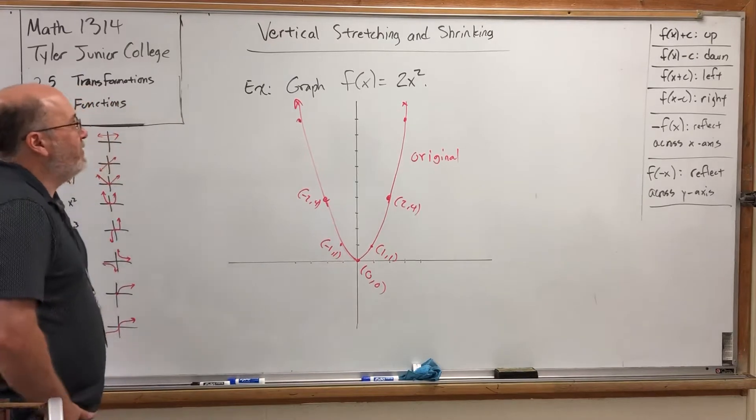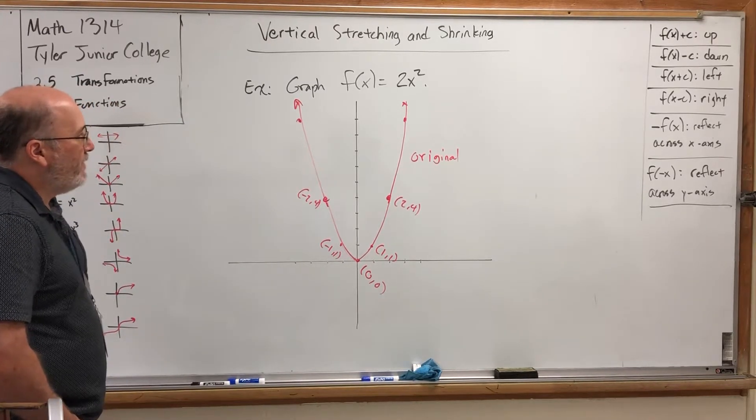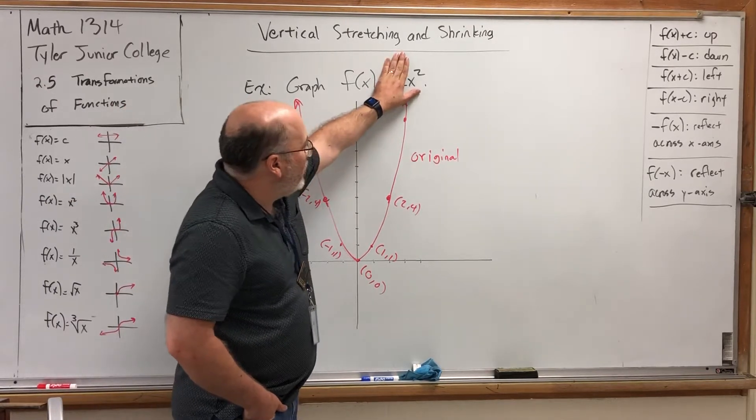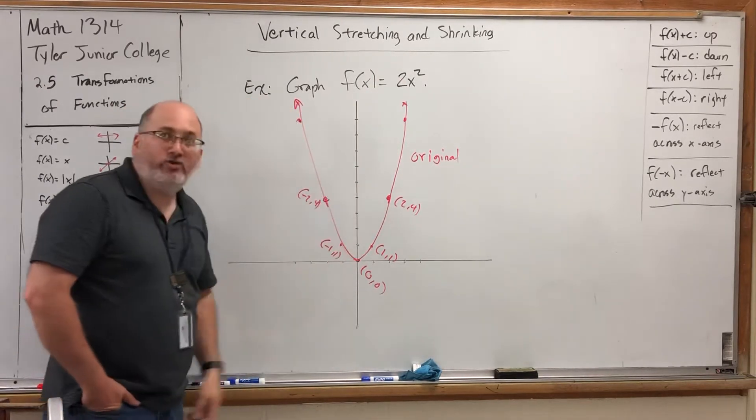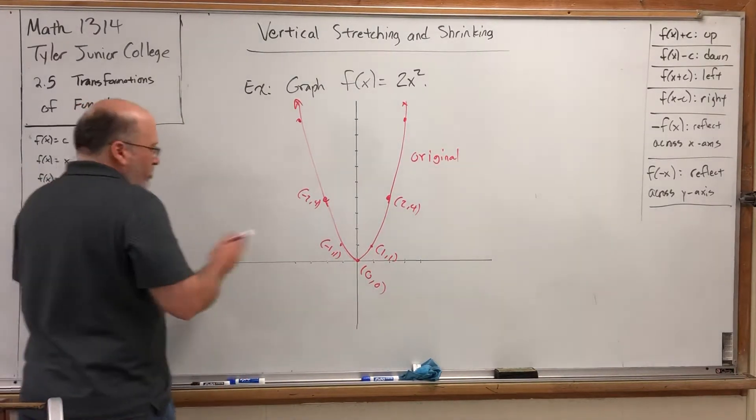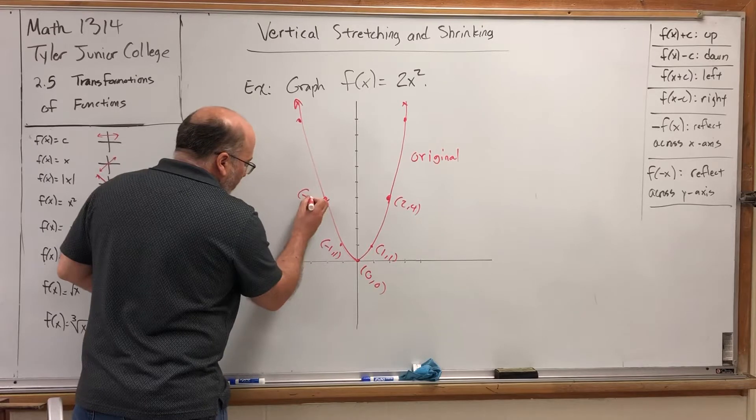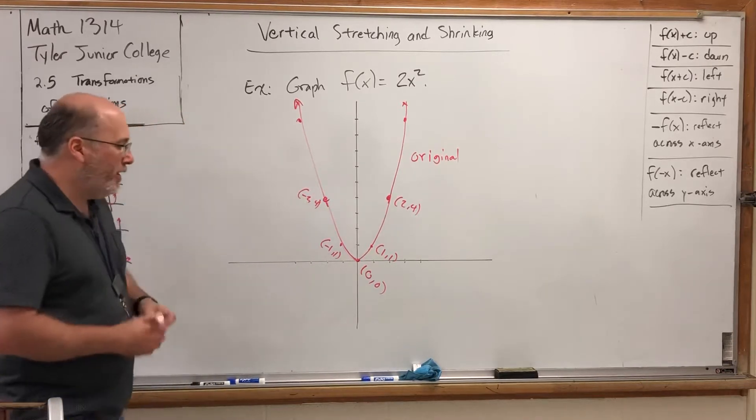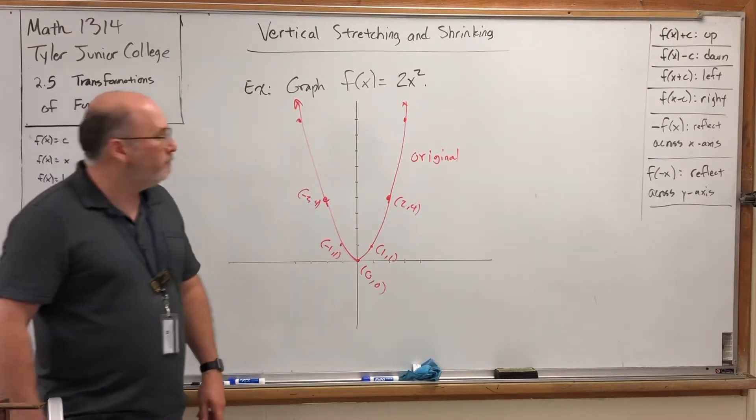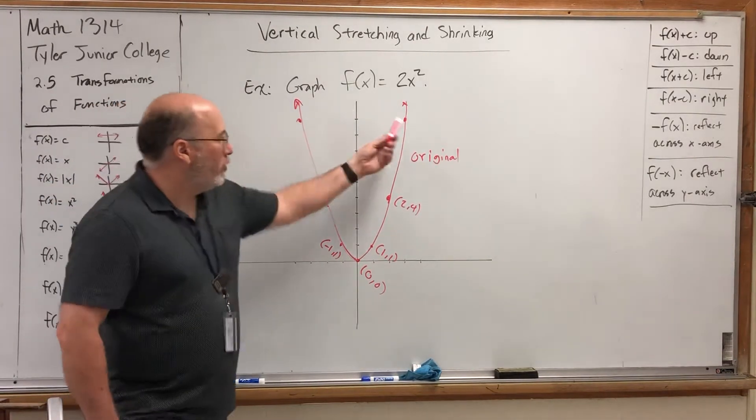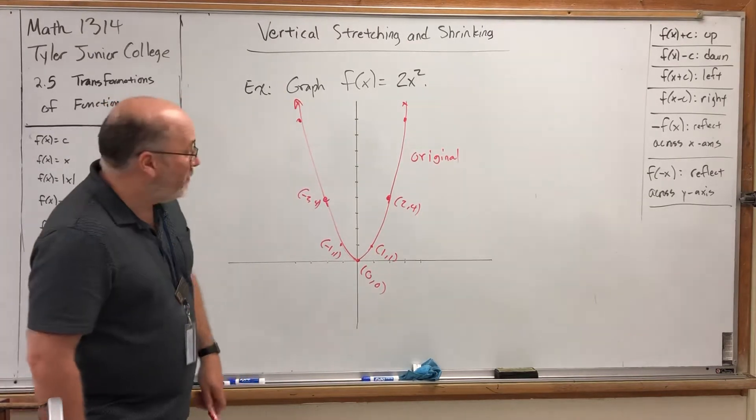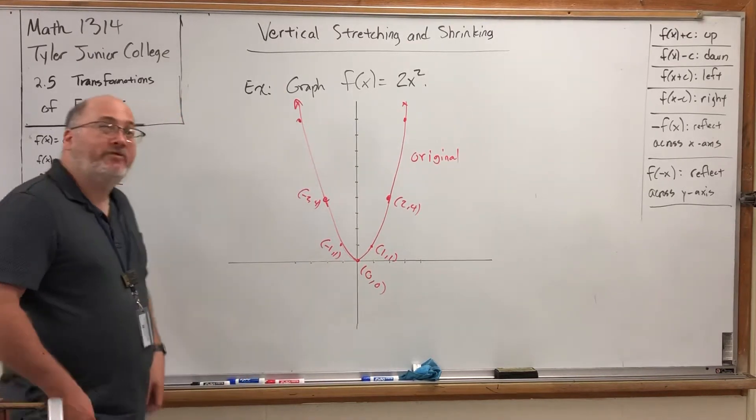So let's see what happens if we try to graph f of x equals 2x squared. Now, without the number multiplied, it's just the squaring function and its graph is currently drawn on the board. We have five reference points: negative 2, 4, negative 1, 1, 0, 0, 1, 1, and 2, 4. I even used two more reference points at 3, 9 and negative 3, 9, but we'll lose track of them after the transformation.